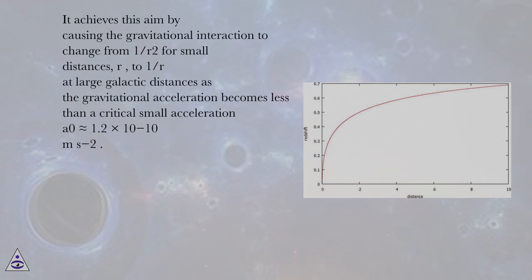It achieves this aim by causing the gravitational interaction to change from 1/R² for small distances R to 1/R at large galactic distances, as the gravitational acceleration becomes less than a critical small acceleration A0 equals 1.2 times 10⁻¹⁰ meters per second squared.